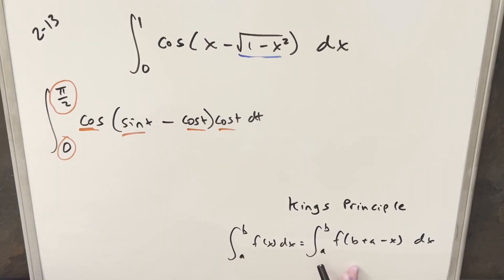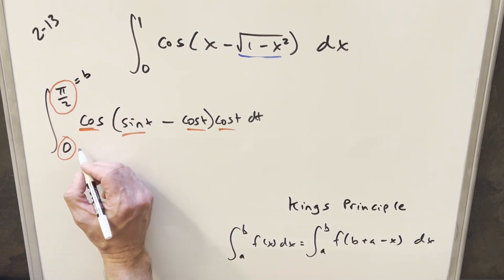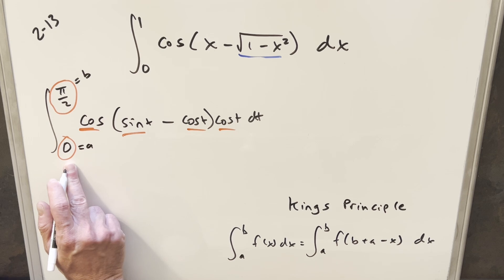Okay, so to do this we'll just need this formula over here to the right, and now for this our b value is going to be this upper bound of pi over 2, our lower bound is going to be a, it's going to be 0.